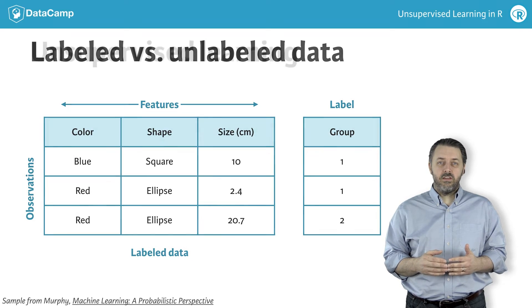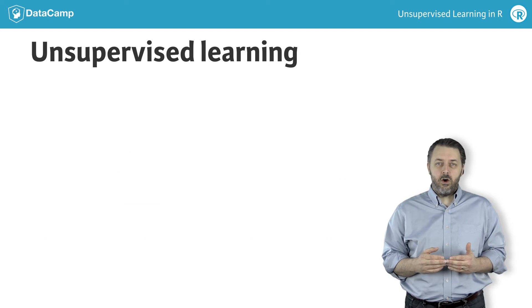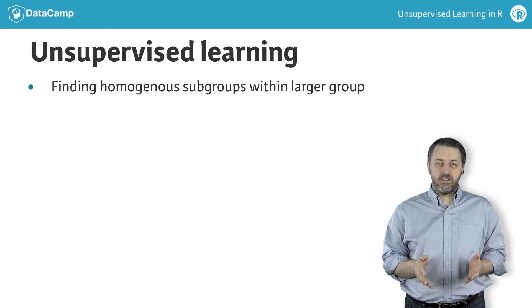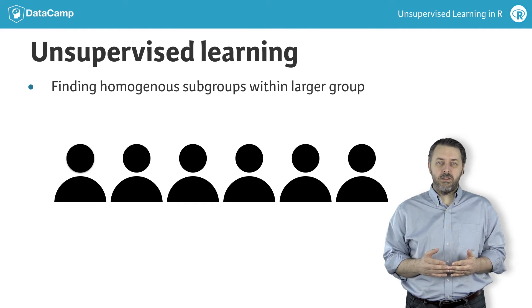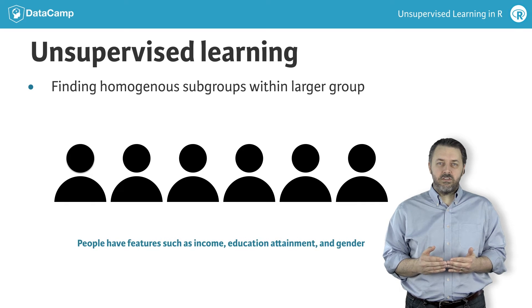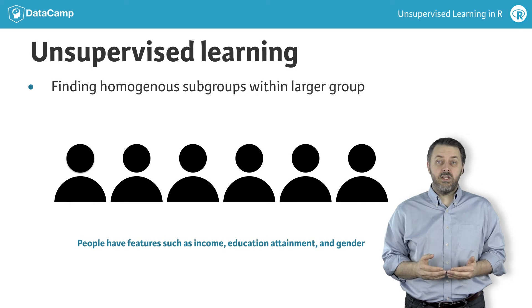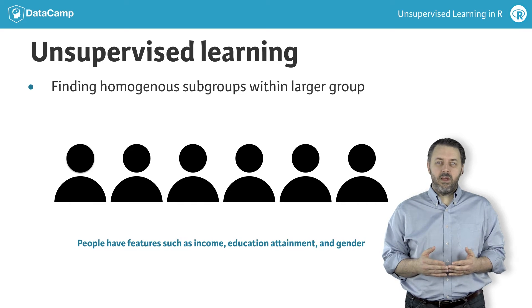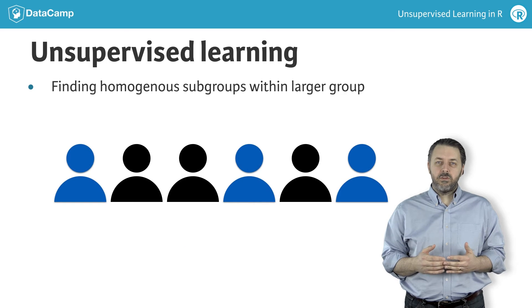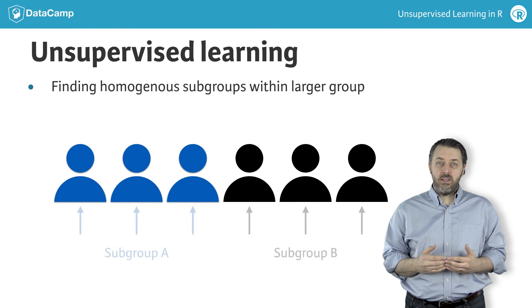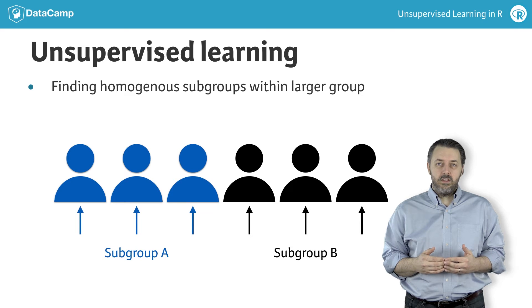Within unsupervised learning, there are two major goals. The first goal is to find homogeneous subgroups within a population. As an example, let us pretend we have a population of six people. Each member of this population might have some attributes or features. Some examples of features for a person might be annual income, educational attainment, and gender. With those three features, one might find there are two homogeneous subgroups, or groups where the members are similar by some measure of similarity. Once the members of each group are found, we might label one group subgroup A and the other subgroup B. The process of finding homogeneous subgroups is referred to as clustering.